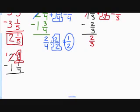4 fourths minus 1 fourth is 3 fourths. There's no whole number. 1 minus 1 is 0. 3 fourths is my simplified answer.